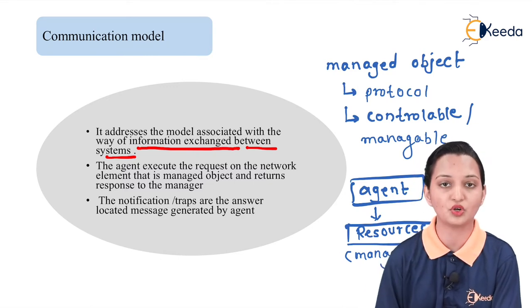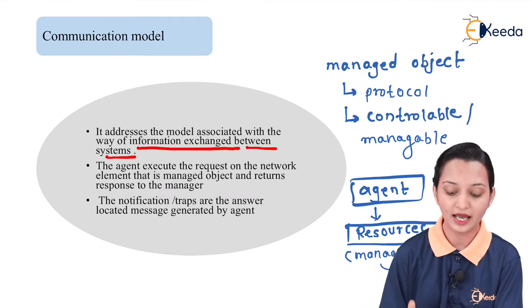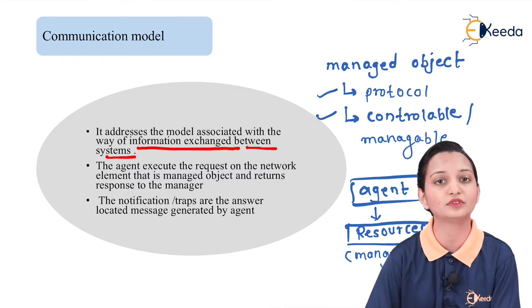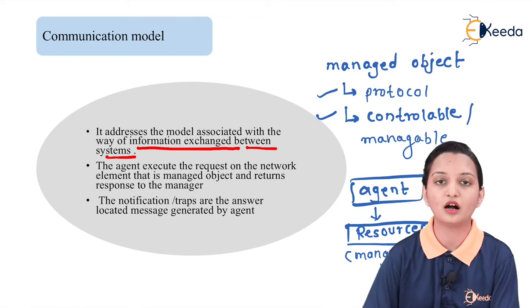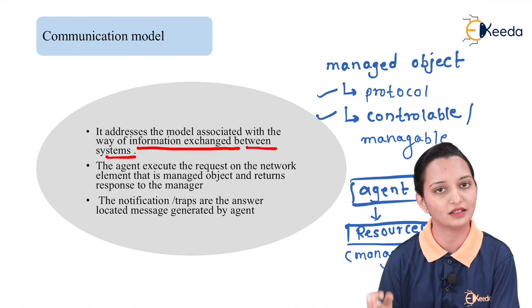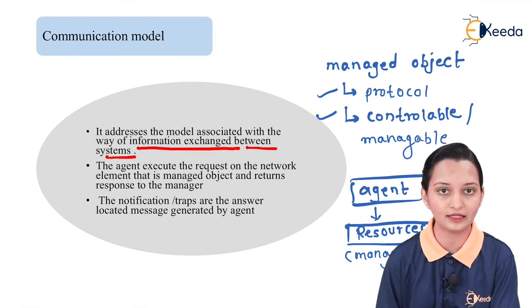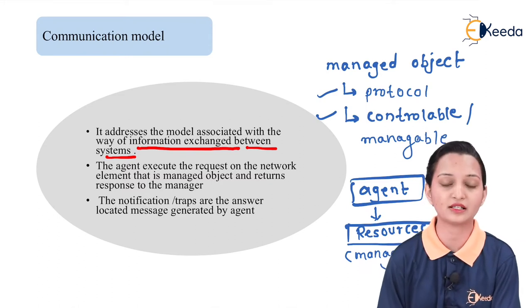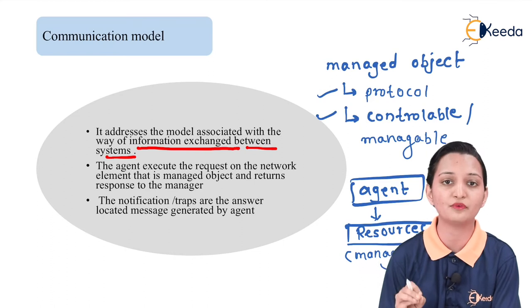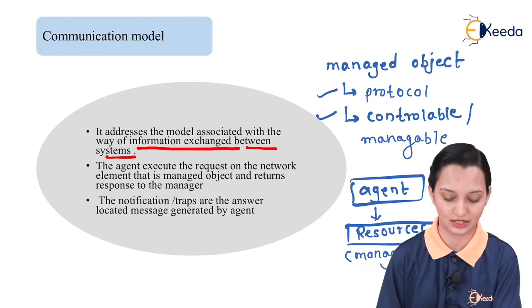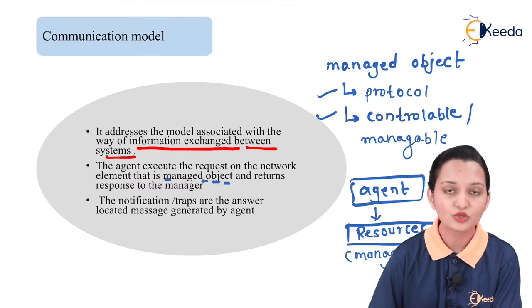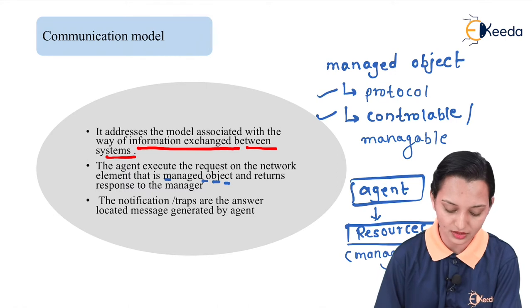It is very important to design a network using managed objects. Because of two key advantages — protocol compliance and controllability — managed objects are more expensive than unmanaged objects. Examples of managed objects include hubs, bridges, routers, and switches. To design any network we need to buy managed elements, which are more expensive, but they ensure higher efficiency of communication. The agent always executes requests on managed objects and returns the response to the manager.